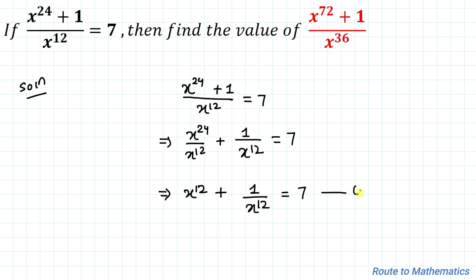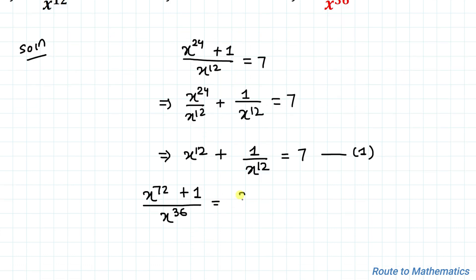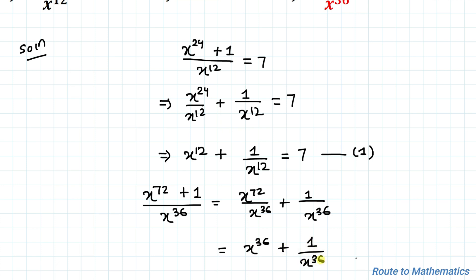Let's take that as equation 1. Now, what are we asked to find? We are asked to find x to the power 72 plus 1 divided by x to the power 36, which equals x to the power 36 plus 1 by x to the power 36.